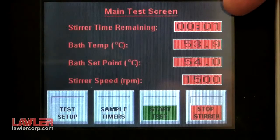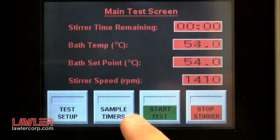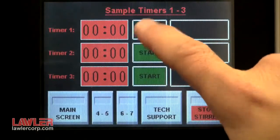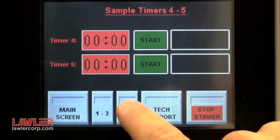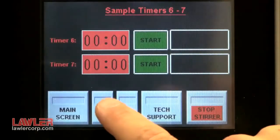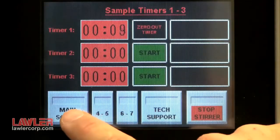As per the D1401 test method, at the end of 5 minutes, the unit stops stirring the sample. Press the convenient touch panel timer to begin counting the time for separation to take place. Seven timers are provided, one for each sample position.